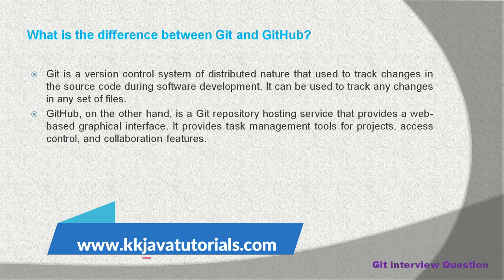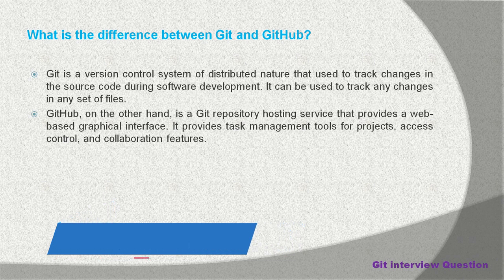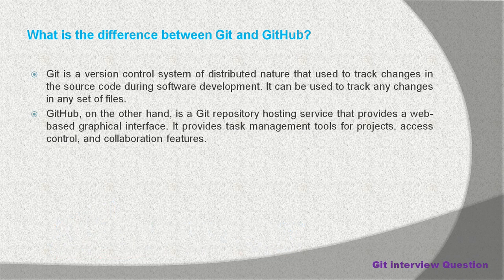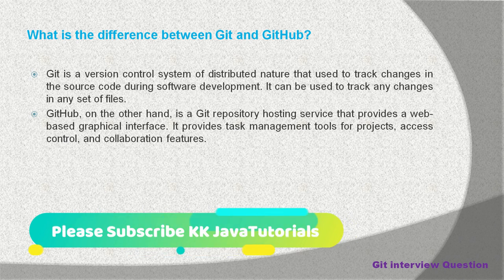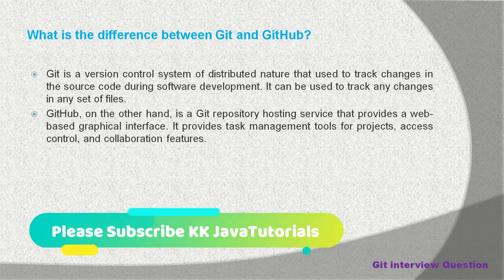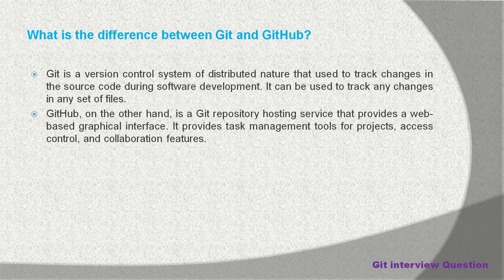Other developers can clone the project to their local machine and start working. If we make some changes on the local repository, we need the Git tool to push those changes again into the remote repository. So Git is a tool which the developer has to install on their local computer system, and GitHub is a Git repository hosting service.